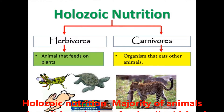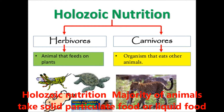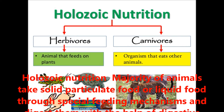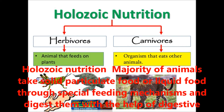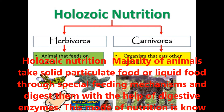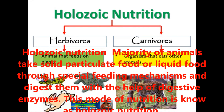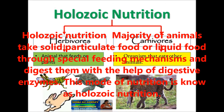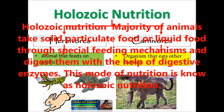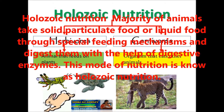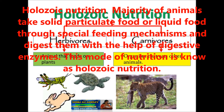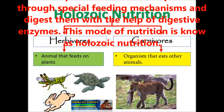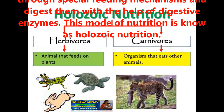In holozoic nutrition, the majority of animals take solid particulate food or liquid food through a special feeding mechanism, and they digest it with the help of digestive enzymes.